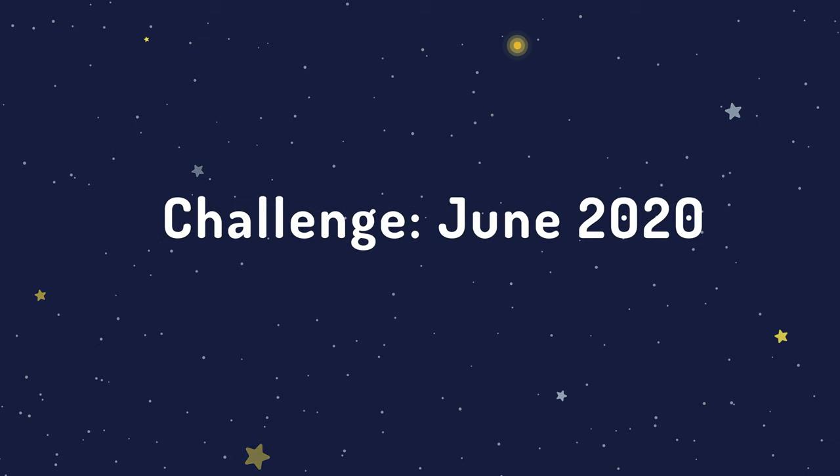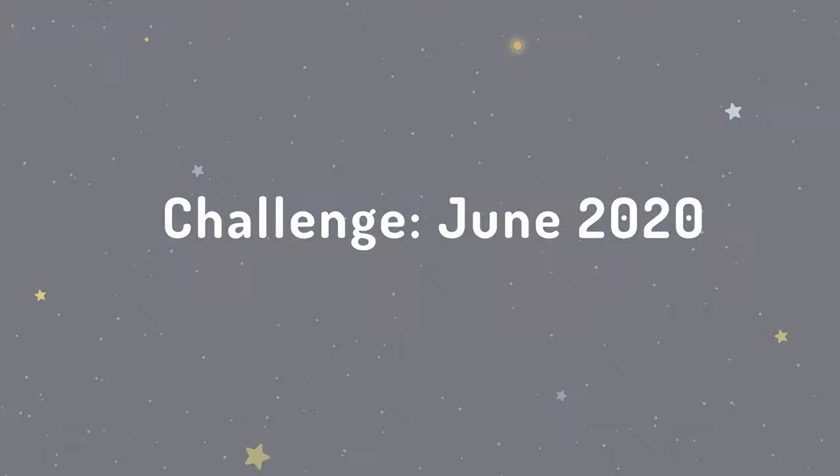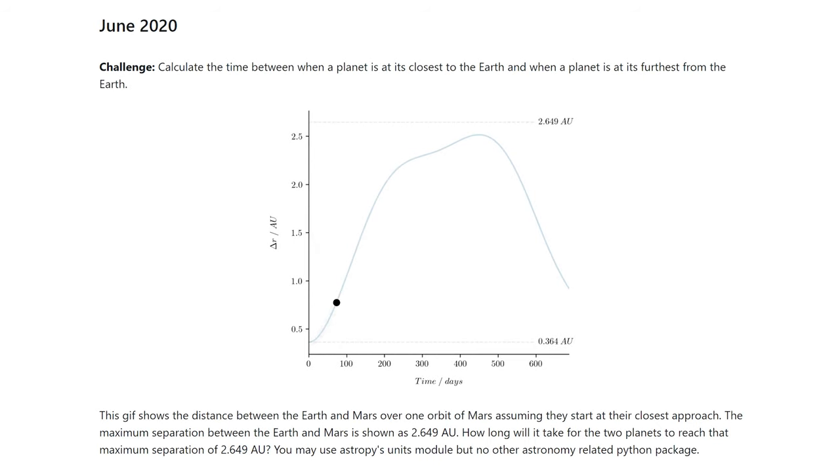Welcome to the first Astronomy and Python challenge. In this challenge you'll have to calculate the time between when a planet is at its closest to the Earth and when a planet is at its furthest from the Earth.